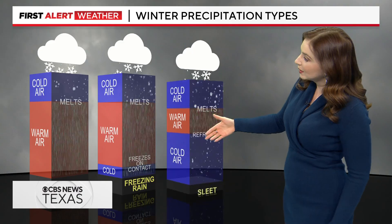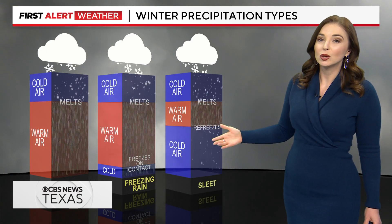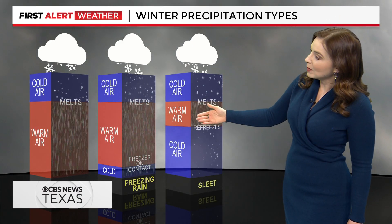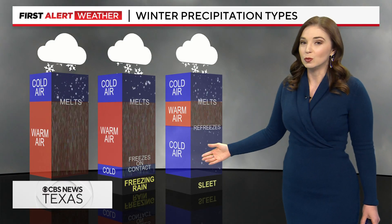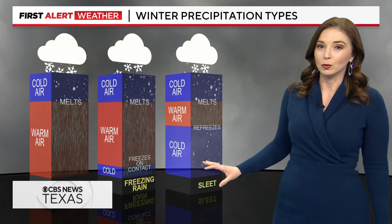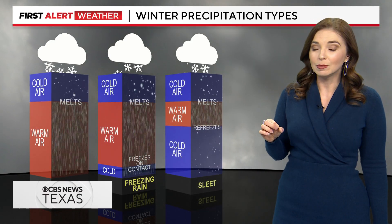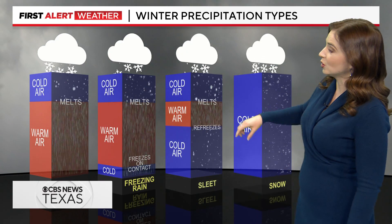With sleet, that column of cold air is a little bit taller, so even though we're getting it to melt for a little bit, it freezes once again as it reaches the surface, and then you get those ice pellets which can cause very slick conditions.